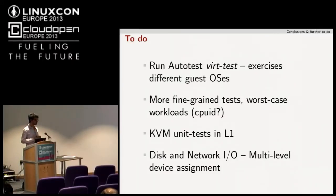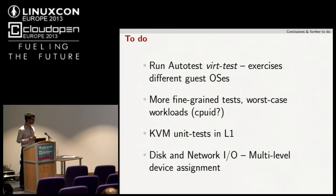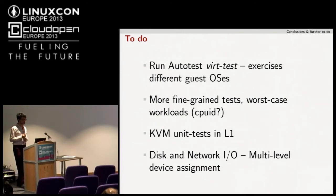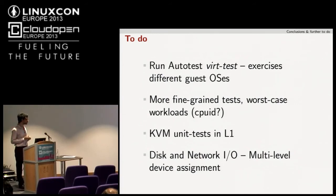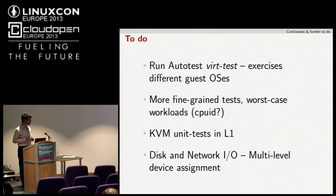One of the KVM developers suggested running autotest inside L1 as part of the guest hypervisor, since it exercises different operating systems and is robust with different workloads. We can also run more fine-grained tests to understand MMU and CPU workloads. I didn't get a chance to test I/O improvements at all — no I/O workloads were tested. More testing with OpenStack, where nested guests run with KVM enabled in your level-one guest, is also planned.